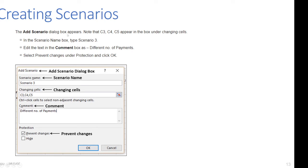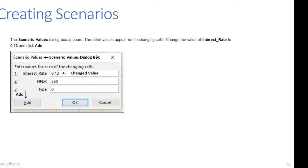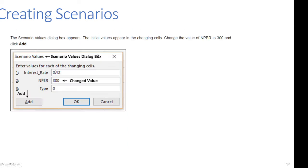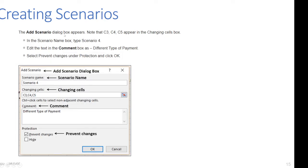Click Add again to create Scenario 3. The Add Scenario dialog box appears — C3, C4, C5 appear in the changing cells box. Name it 'Scenario 3', edit the comment as 'Different number of payments', select 'Prevent Changes', and click OK. The Scenario Values dialog appears with the initial values; change the number of payments from 360 to 300, then click Add.